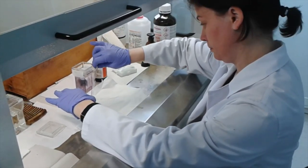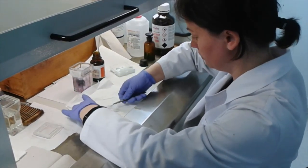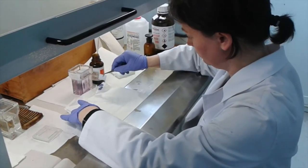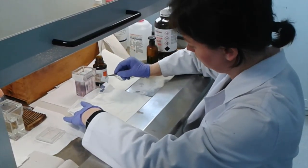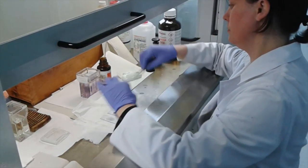For the staining process, we are using immunohistochemistry or IHC. IHC refers to the process of detecting antigens like proteins in cells of a tissue section by exploiting the principle of antibodies binding specifically to antigens in tissues.